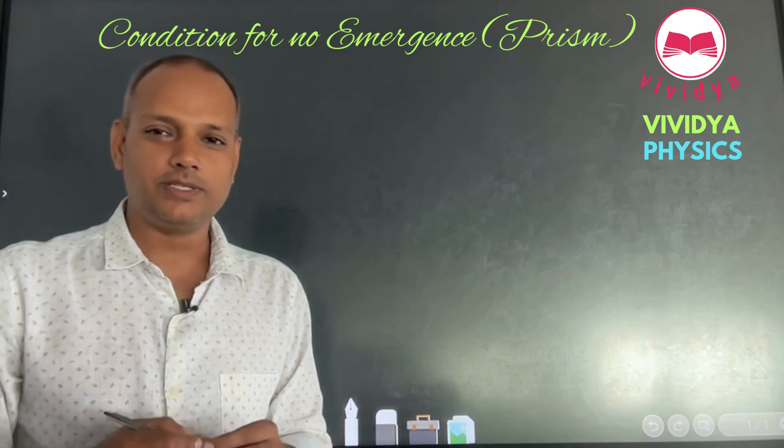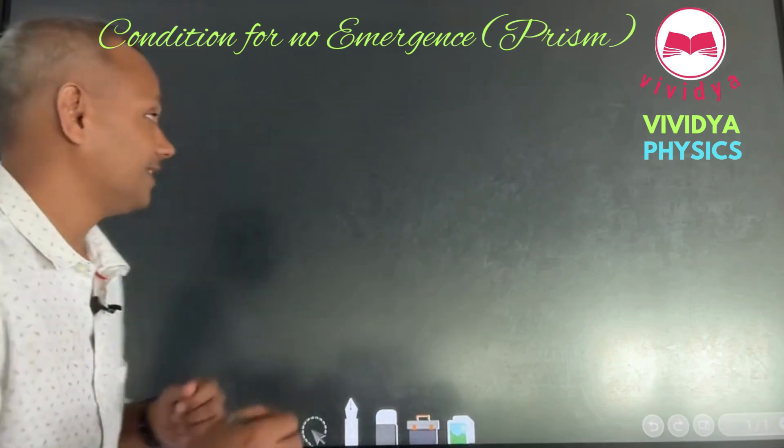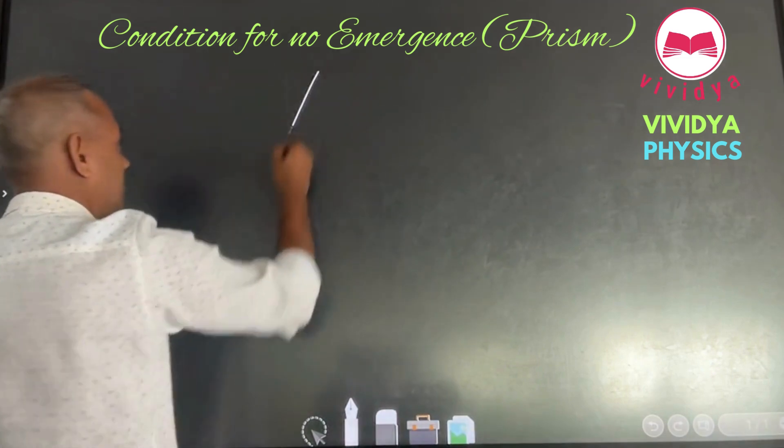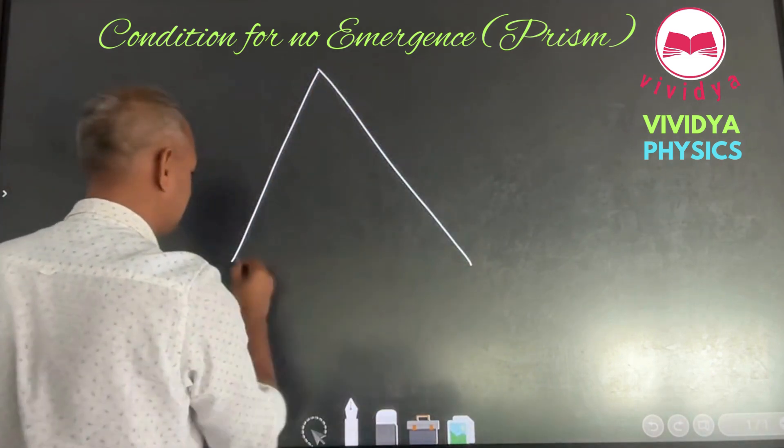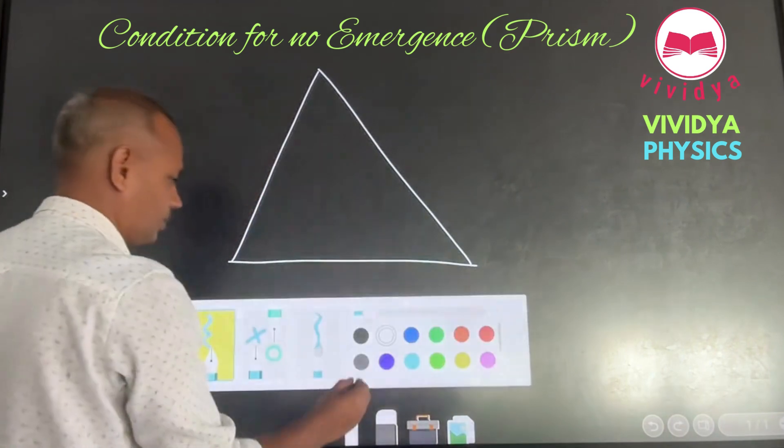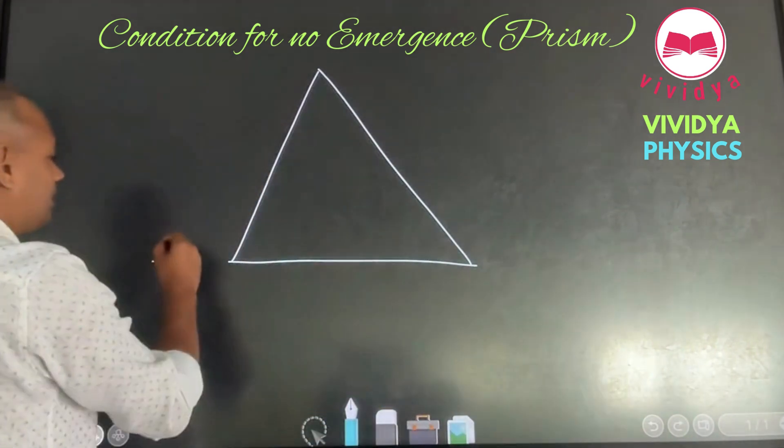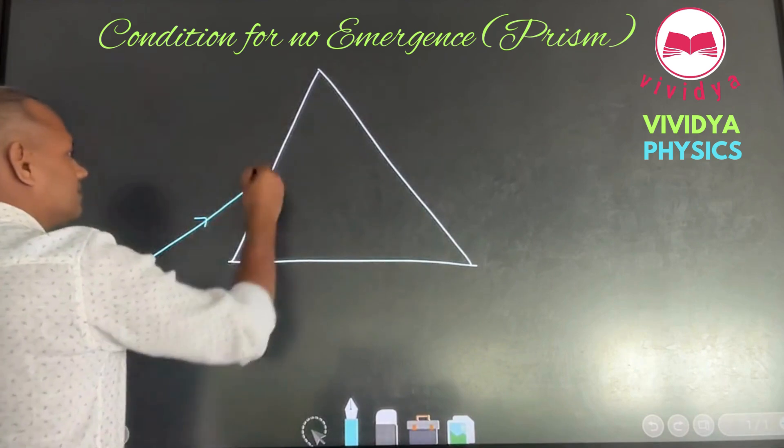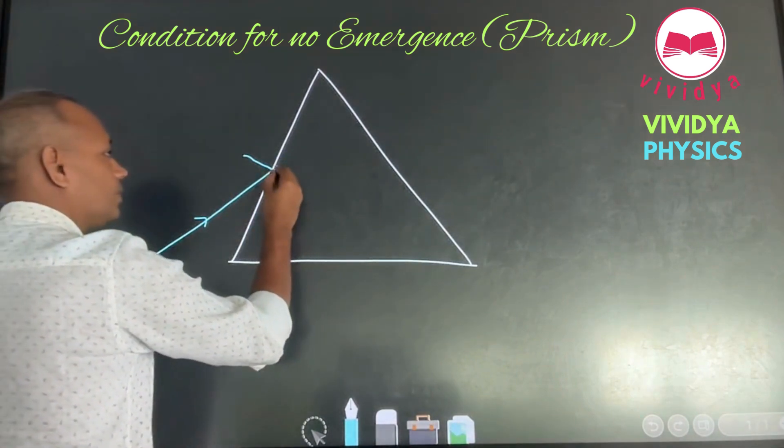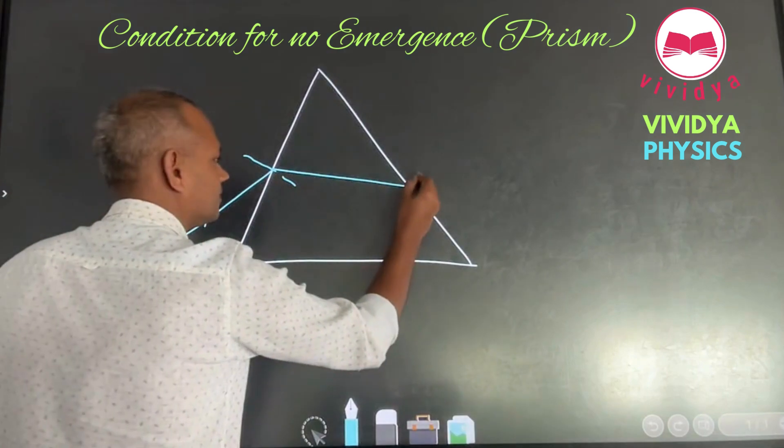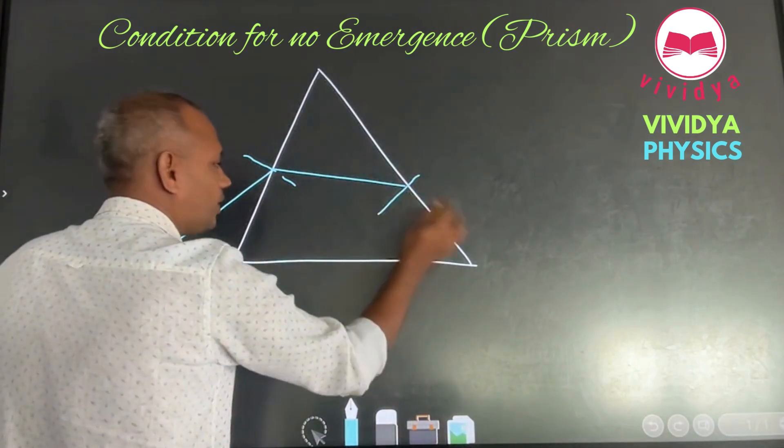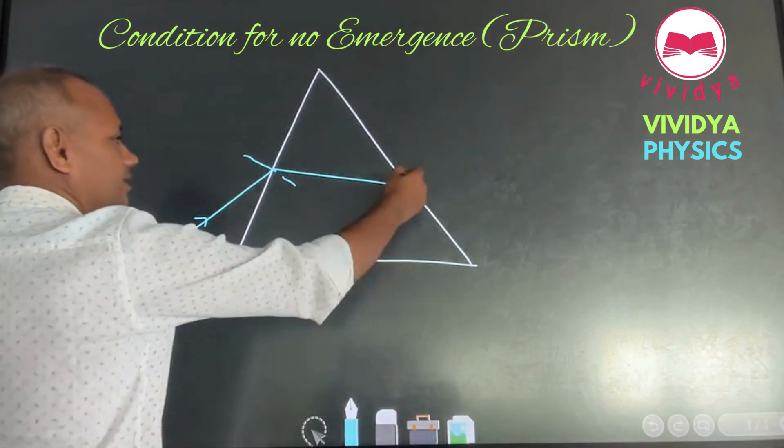Today we will see the condition for no emergence from a prism. Suppose you have a prism. Our target today is to find out whatever is the angle of incidence through the prism, there is no emergence from this side. So there is no emergence from here.